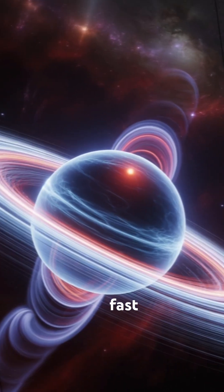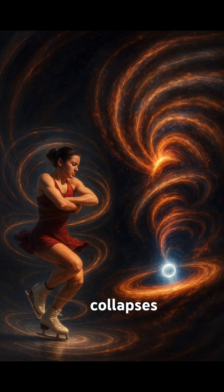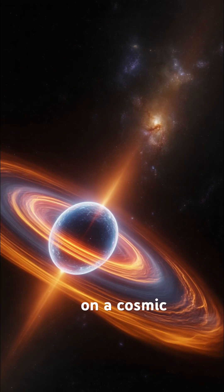Why do these stars spin so fast? It's all about conservation of angular momentum. When the star collapses, it's like a figure skater pulling in their arms during a spin. Only this time, it's on a cosmic scale.